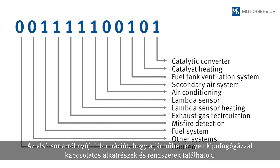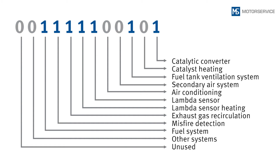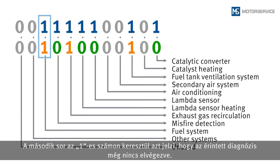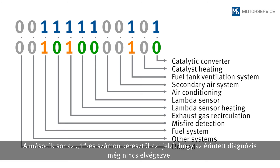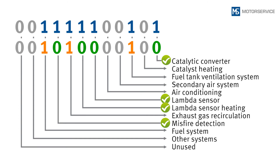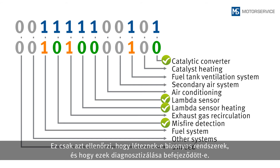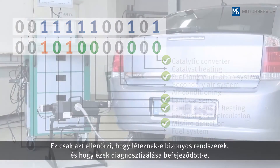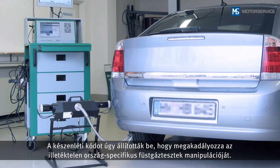One row provides information about which exhaust gas related components or systems are present in this vehicle, indicated by a 1 in the corresponding position. In the second row, a 1 indicates that the applicable diagnostic test has not yet been performed; the value is only set to zero once this area has been tested. The readiness code does not provide information on whether errors are present — it is purely a check of whether certain systems are present and whether the diagnostic tests on these systems are finished. It was established to prevent manipulation in country-specific exhaust gas tests.